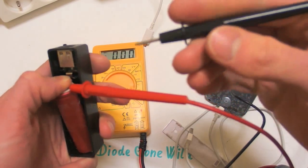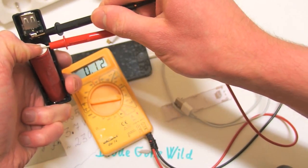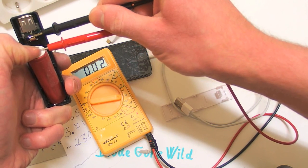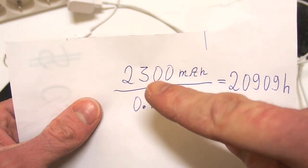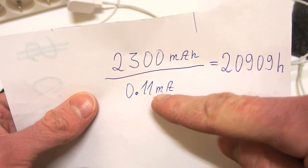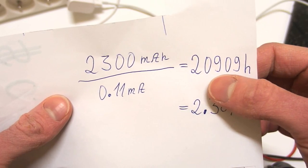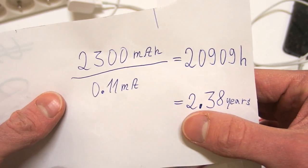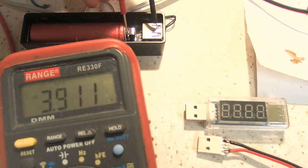So what is the quiescent current? How much does it draw from a battery when it's not in use? And it's about 0.11 milliamps. That's not much. How long does it take before the current will discharge the battery? So the capacity is 2300 milliamp hours and the quiescent current is 0.11 milliamps, and it gives you 20,900 something hours. And this is about 2.38 years.